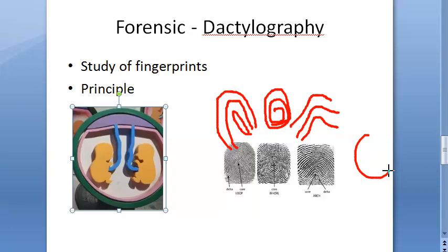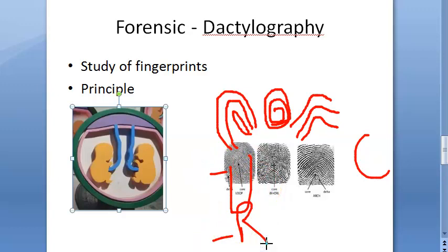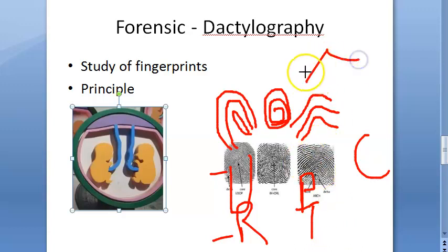The loop pattern is the most common, occurring in 65% of cases. There are two types: ulnar loop and radial loop, depending on which side they lean toward. For the arch pattern, a plain arch is wave-like and flat, while a tented arch has sharp spike-like formations.